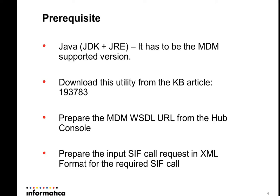You can download this utility from KB Article 193783, available in the My Support portal. The prerequisites are: you need the Java version supported by MDM on the client machine, and you should have the visual URL generated from the Hub Console already. You also need to prepare the input CIF calls request in XML format.